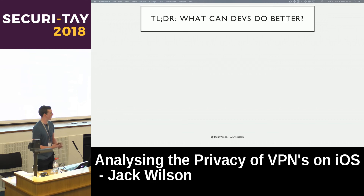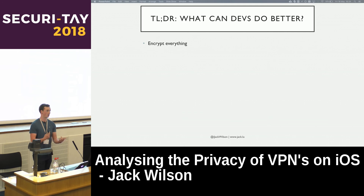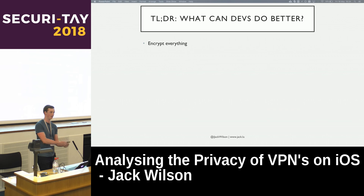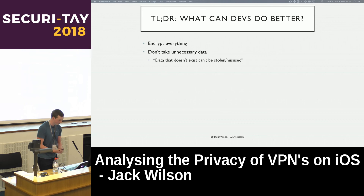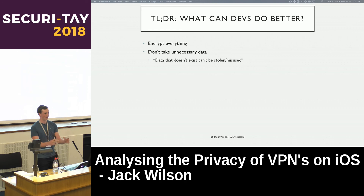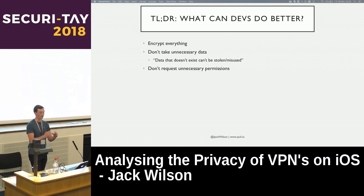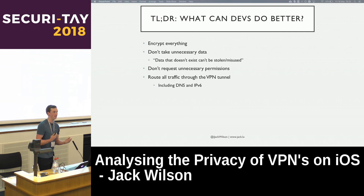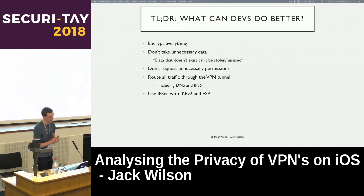As a quick summary of what developers can do to improve VPN security — and this doesn't just apply to iOS, it's VPNs in general: encrypt everything where you can; if relying on a third-party ad network that doesn't encrypt, potentially move to one that does. Don't take unnecessary data — data you don't have can't be stolen or misused, and it minimises your risk and impact in a data breach. Don't request unnecessary permissions. Make sure all traffic is routed through the VPN tunnel, including DNS traffic to mitigate DNS leaks and IPv6 traffic to mitigate IPv6 leaks. And use the best recommended tunnel protocol — IPsec with IKEv2 and encapsulating security payloads.